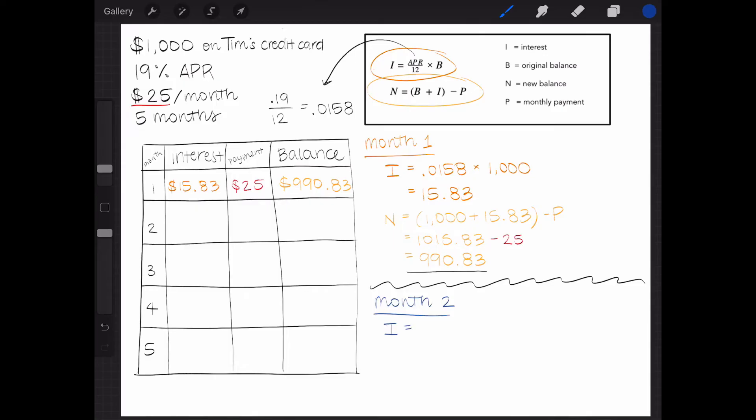So using that first formula again, I can use the same monthly interest rate, 0.0158, and multiply it by last month's balance of $990.83, which equals $15.66. I can put that in the interest box for month 2.